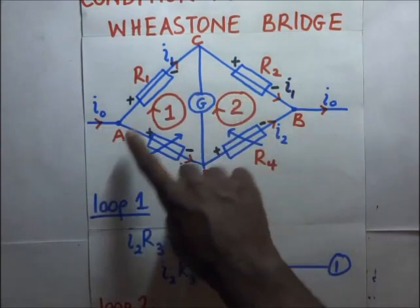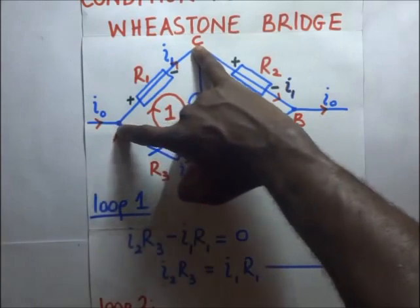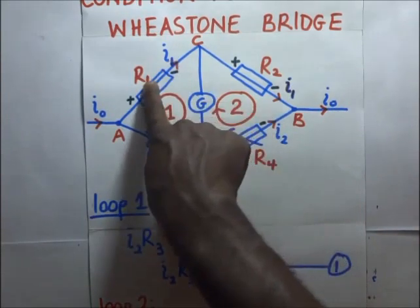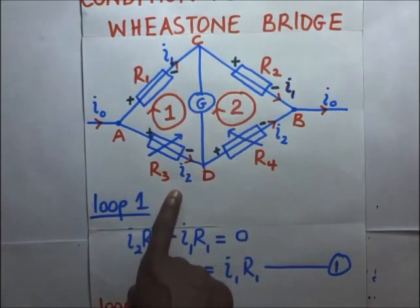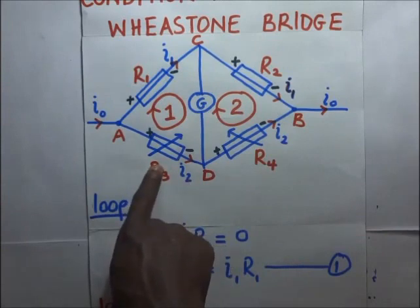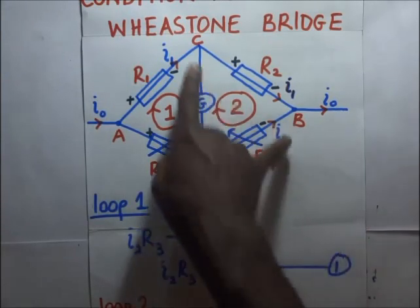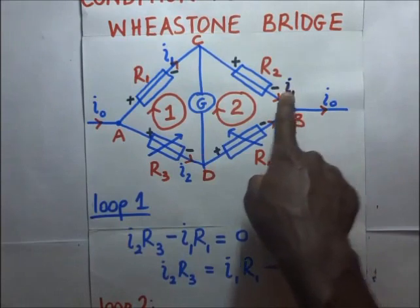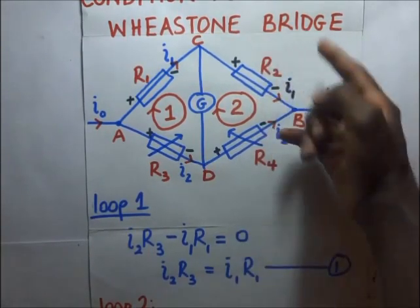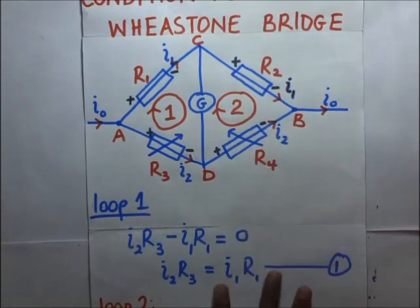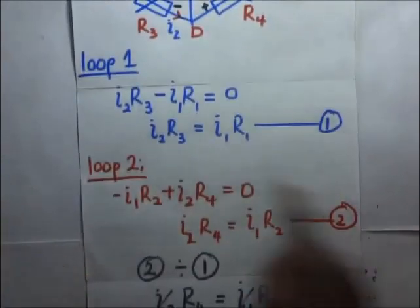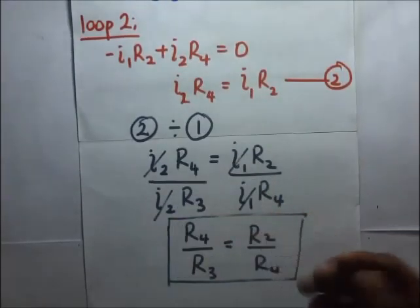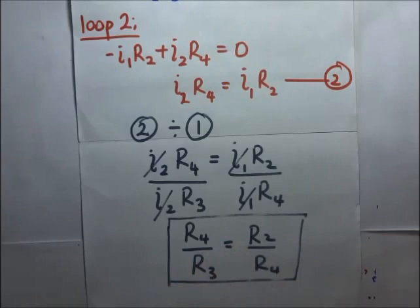For Equation 1, the PD across AC equals I1·R1 = I2·R3. For Equation 2, the PD across CB equals I1·R2 = I2·R4. Dividing these two equations gives the same balance condition: R4/R3 = R2/R1. Both derivation methods yield the same balance condition for the Wheatstone bridge.